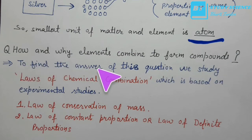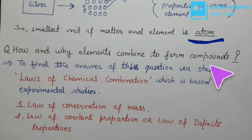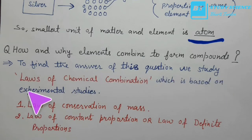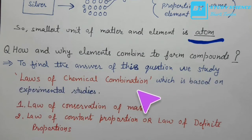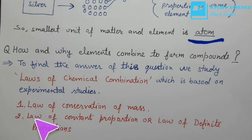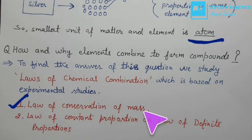Here the question arises: how and why do elements combine to form compounds? To find the answer, we study the laws of chemical combination, which are based on experimental study. The first law is the law of conservation of mass, and the second is the law of constant proportion.